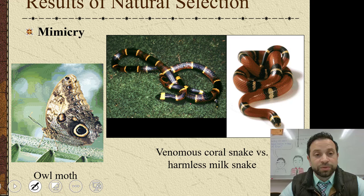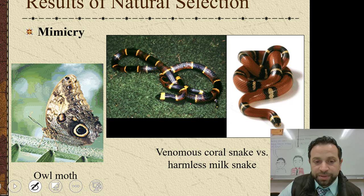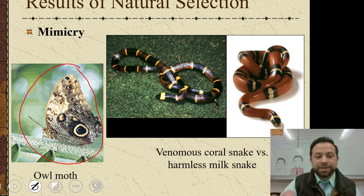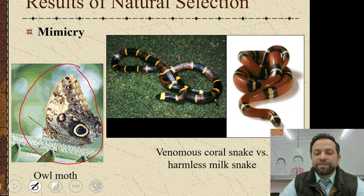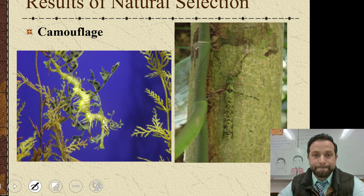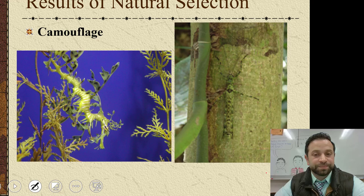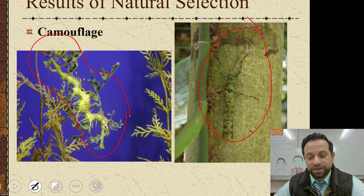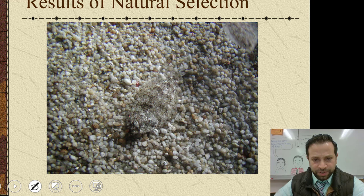Here are some results of natural selection. First, mimicry — when you mimic something that could potentially be dangerous. This moth is called an owl moth because it's mimicking an owl. The venomous coral snake versus the harmless milk snake: the harmless milk snake wants to look like the venomous coral snake because it gains an advantage. Then there's camouflage — the idea that you blend in with your environment so that predators wouldn't be able to see you. You can see some cool examples here, including one at the Monterey Aquarium.